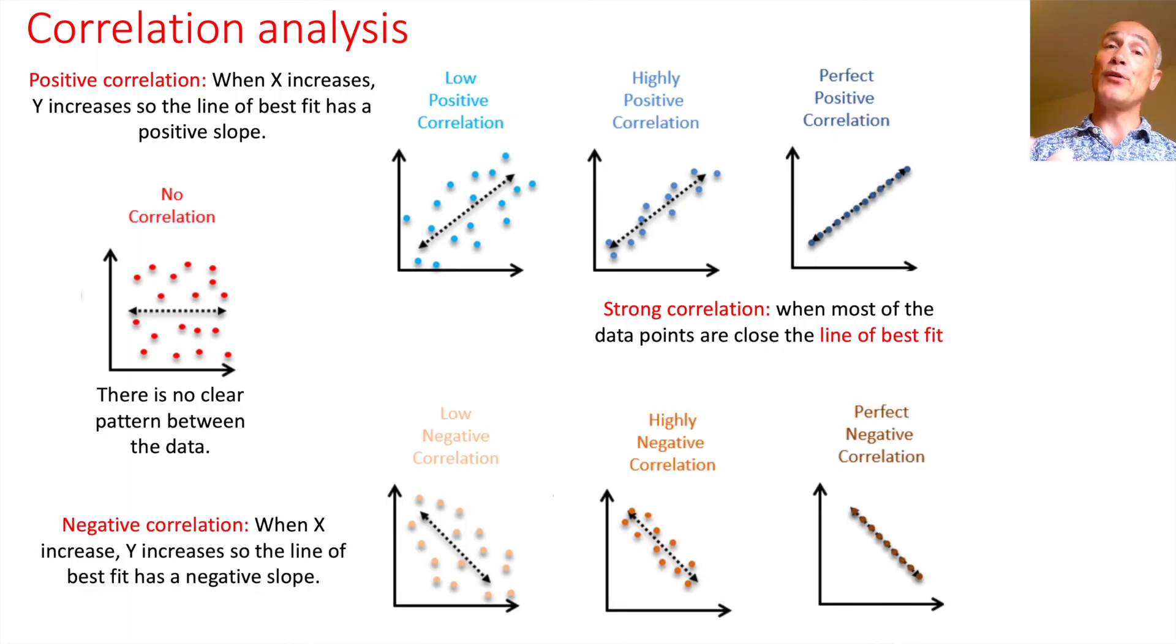Of course, as well as positive correlation, you get negative correlation, which means as x increases, y decreases. And exactly the same. The first one, I wouldn't have too much confidence with that relationship. I'll be pretty confident with that relationship because it's got a high negative correlation. And this, I'll be exceptionally confident with that relationship because all the points are on the best fit line. So that's a perfect negative correlation.